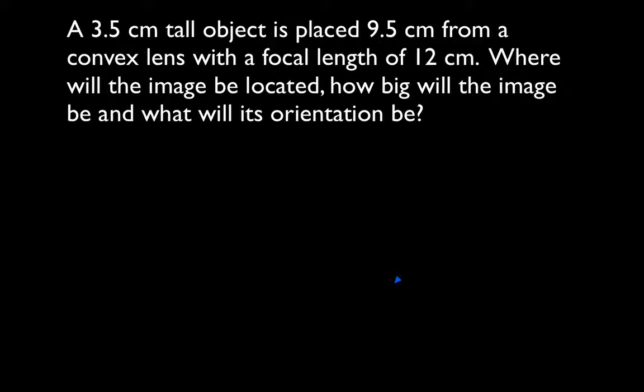The problem says we have an object that's 3.5 centimeters tall. It's 9.5 centimeters from the convex lens, and the focal length is 12 centimeters. We want to know where will the image be located, how big will it be, and what will its orientation be. You should already be thinking the object distance is 9.5, the focal point is 12 centimeters away. The object is inside the focal point. What does all of that mean?